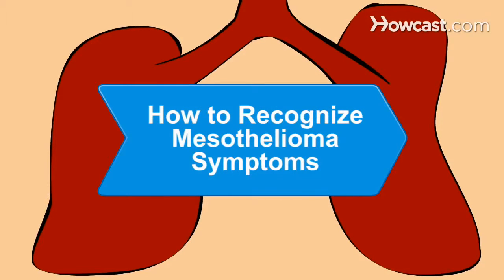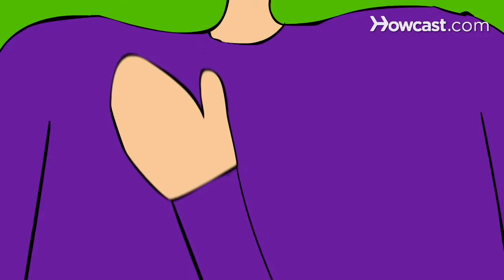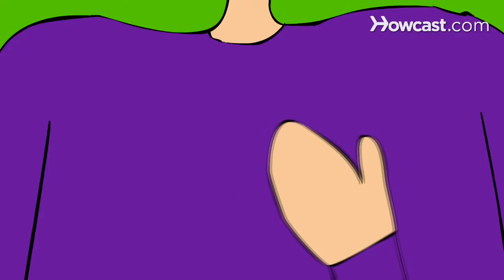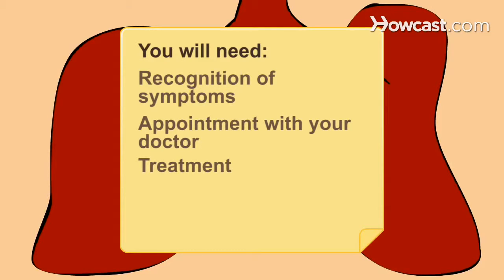How to Recognize Mesothelioma Symptoms. Mesothelioma is a rare and aggressive form of cancer that affects the thin layer of tissue that surrounds the organs, known as the mesothelium. Perform a self-exam with these guidelines to recognize this disease. You will need recognition of symptoms and an appointment with your doctor and treatment.